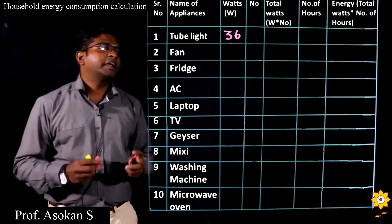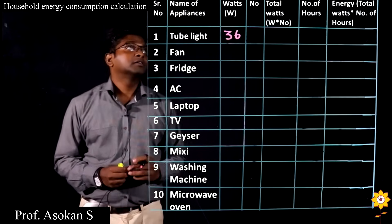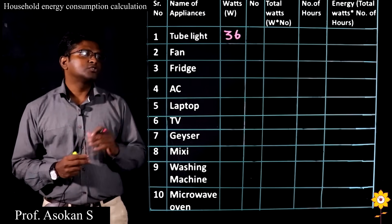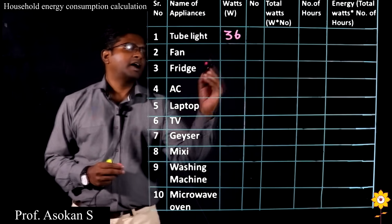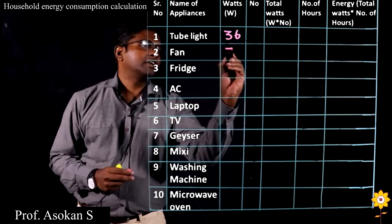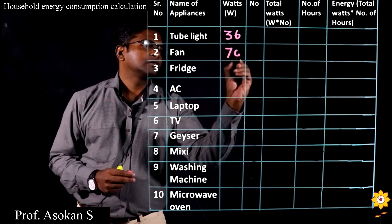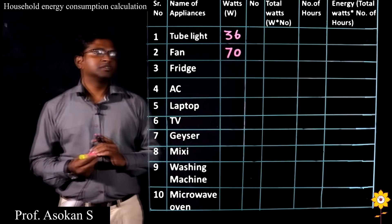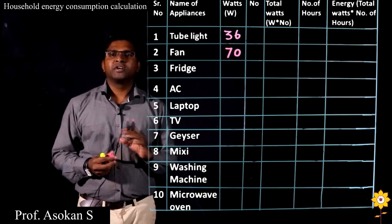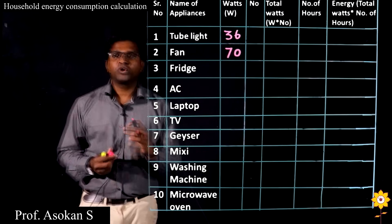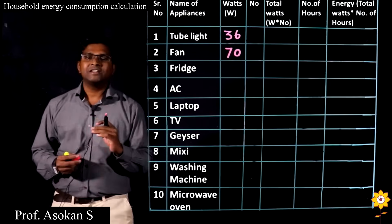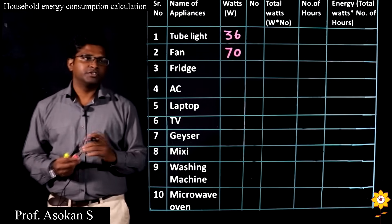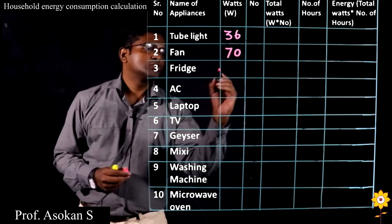Next, we take the fan. The fan we are using will be consuming 60 to 70 Watt — I take it as 70 Watt. Then fridge: around 200 Watt. I am talking about a 162 to 180 liter fridge, so it is 200 Watt.